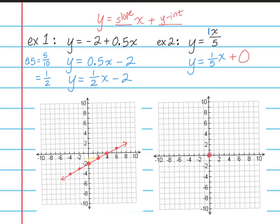So we're going to start at the origin and count our slope. Our slope is up 1 over 5, and we're going to put a point. Continue with this pattern a few more times. And as soon as you have several points, you can draw your line.